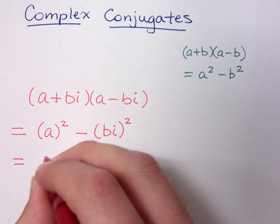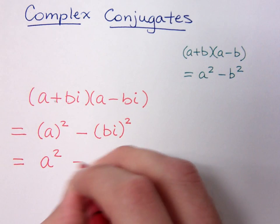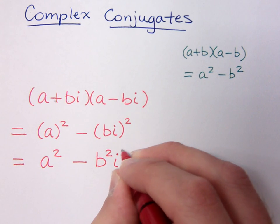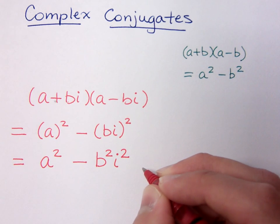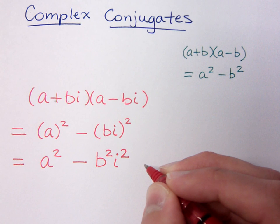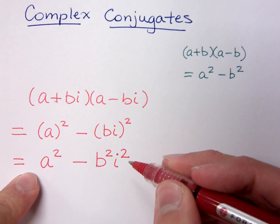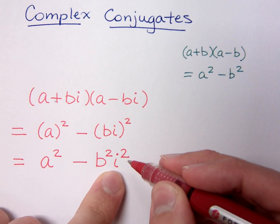Now, when you square a, of course, you're going to get a squared. Over here, you're going to get b squared i squared. So it is a difference of squares. However, this is a difference of squares involving complex numbers, and you've got this i squared.